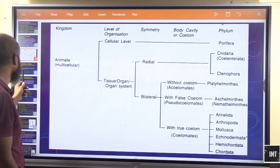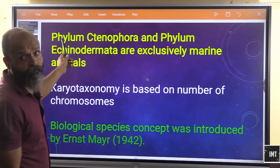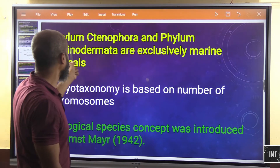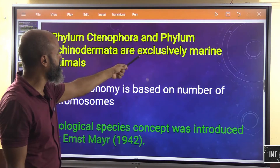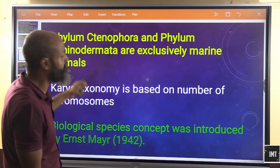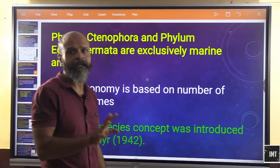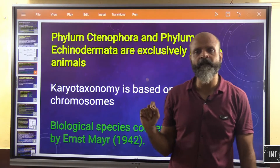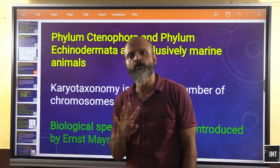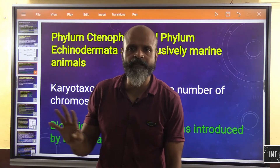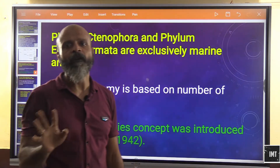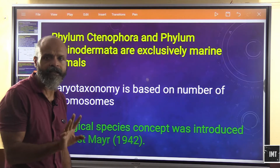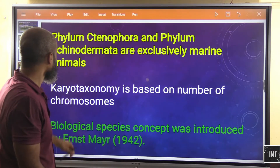It is important to note that Phylum Ctenophora and Phylum Echinodermata are exclusively marine animals — they are not found in freshwater or terrestrial environments.